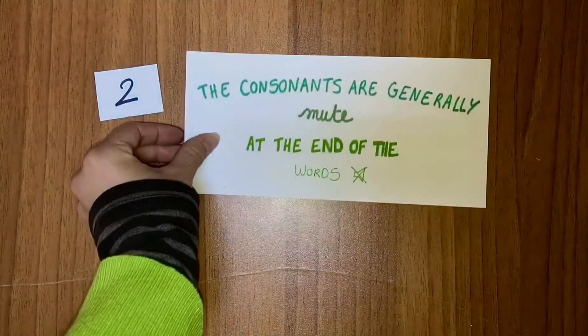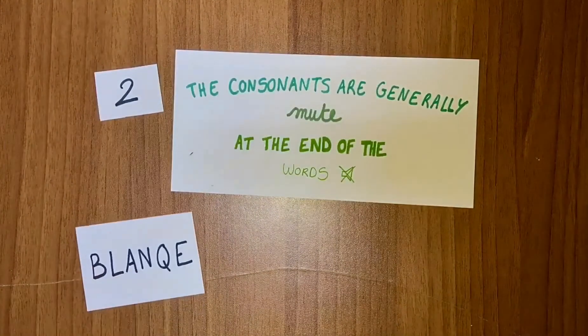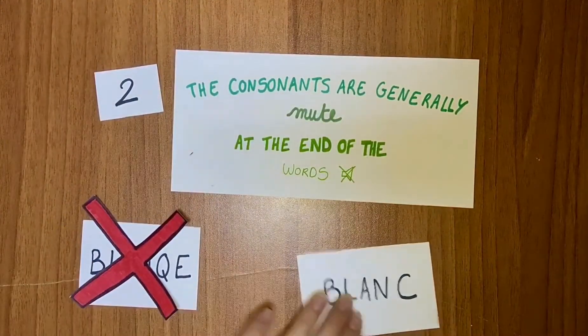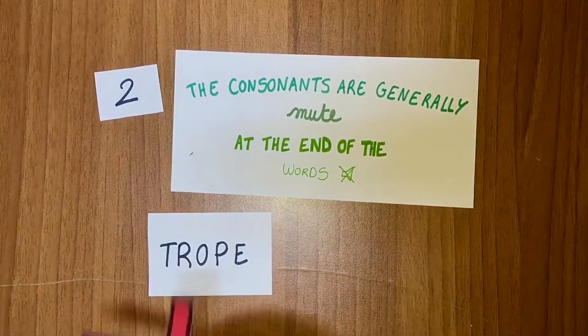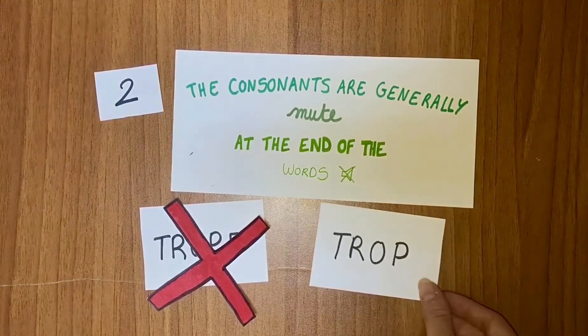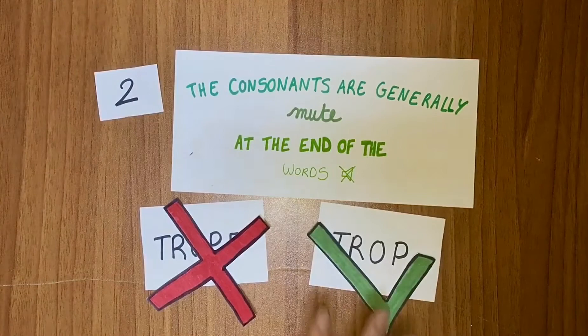Secondly, the consonants are generally mute at the end of words. You will not say 'blanc,' but 'blanc.' Or 'trop,' but 'trop.' And you really have to be careful about that. But there are some exceptions.